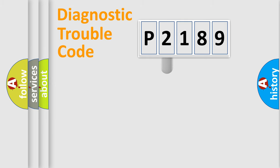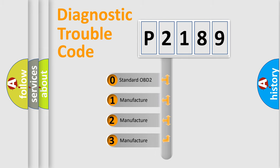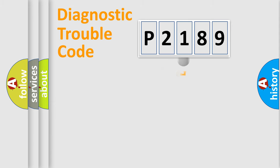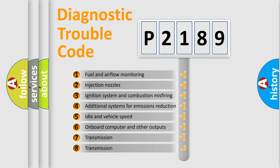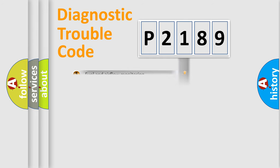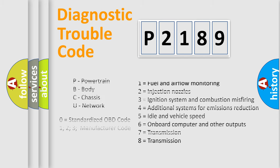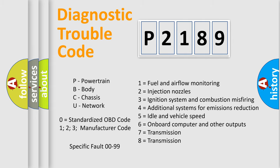This distribution is defined in the first character of the code. If the second character is expressed as zero, it is a standardized error. In the case of numbers 1, 2, 3, it is a more specific expression of a car-specific error. The third character specifies a subset of errors. This distribution is valid only for the standardized DTC code, and only the last two characters define the specific fault of the group.